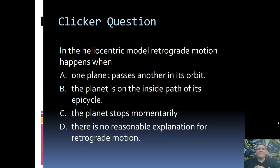All right, here is our first clicker question. In the heliocentric model, retrograde motion happens when: A, one planet passes another in its orbit. B, the planet is on the inside path of its epicycle. C, the planet stops momentarily. Or D, there is no reasonable explanation for retrograde motion. Go ahead and think about it and we'll discuss in just a bit.